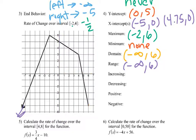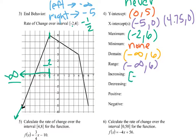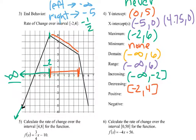Where is it increasing? It starts down at negative infinity and it increases until it hits right there. So it's increasing from negative infinity to negative 2. Then we decrease from negative 2 to positive 4. And then we're still decreasing until we get to 6. So even though it's a different rate, it's still one interval — negative 2 to 6 for decreasing.